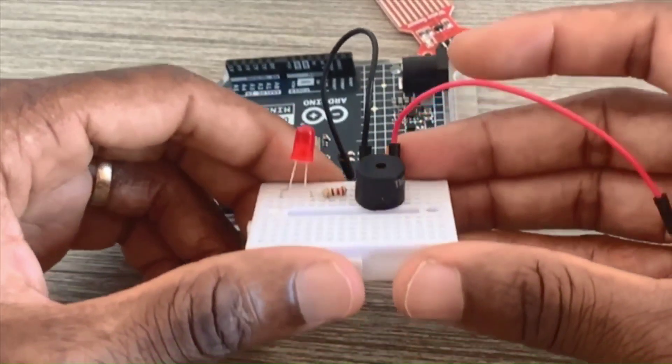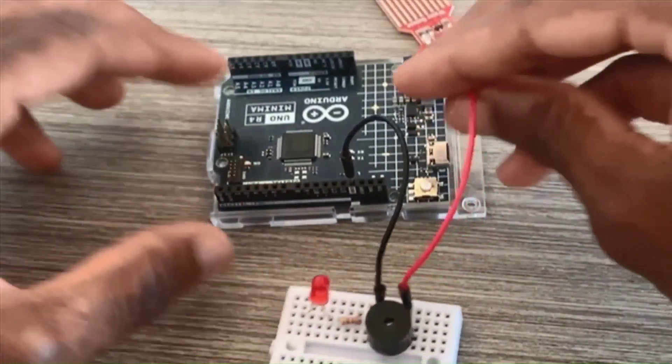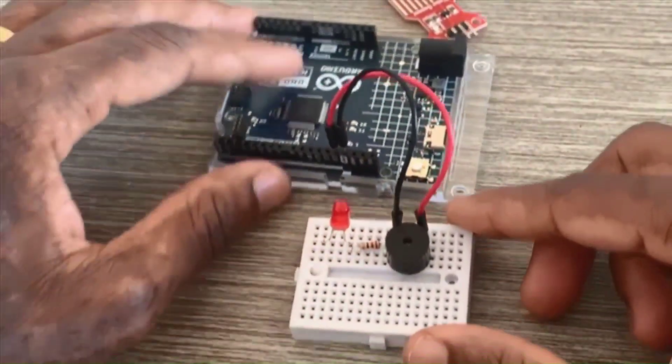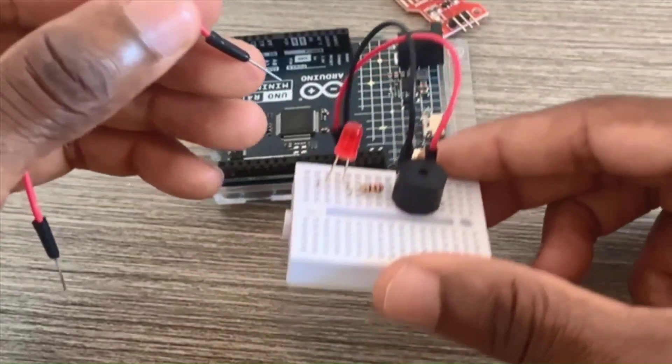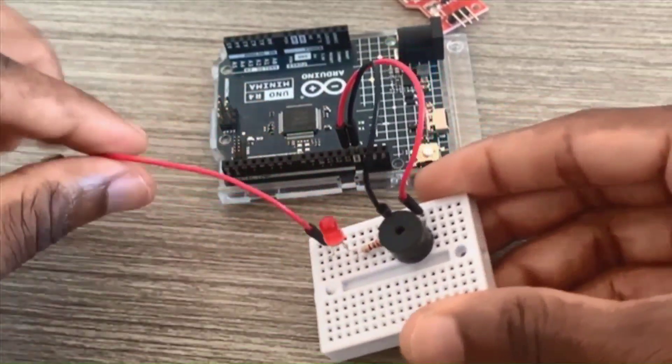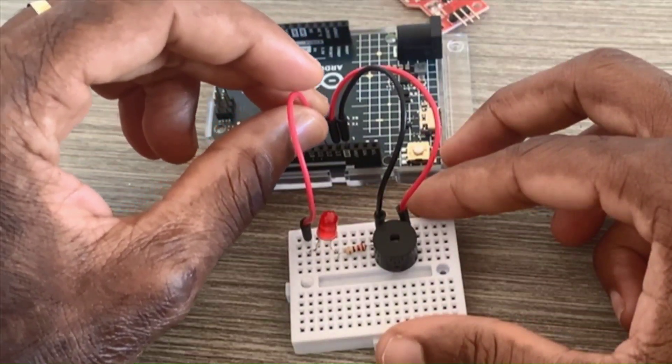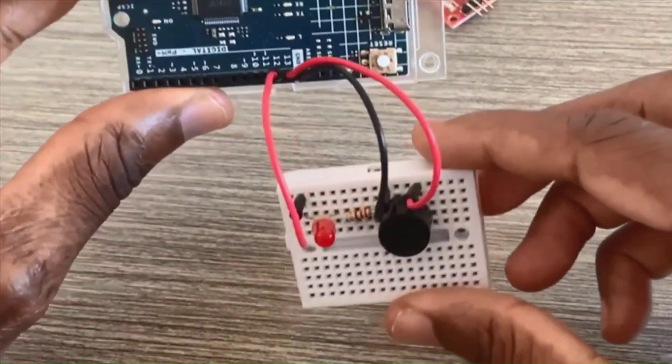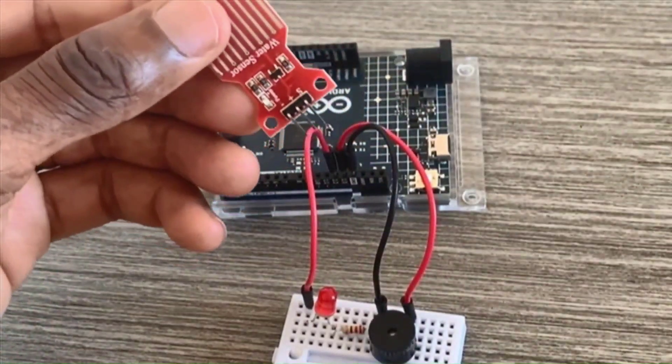Now we need one more wire, and this time I connect the positive side of the buzzer to pin 13. We need another wire, and the anode of this LED is attached to pin 12 of the Uno R4 Minima like so.